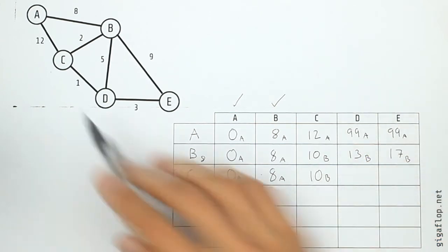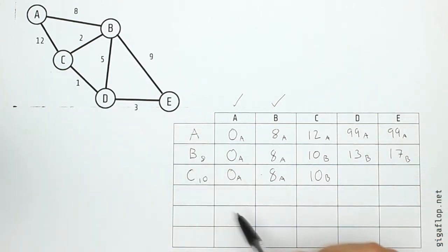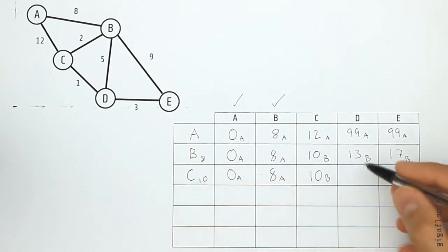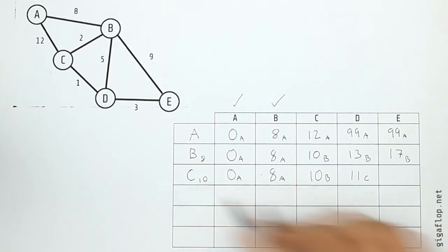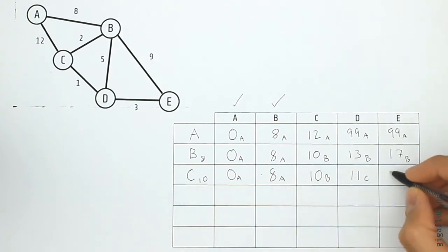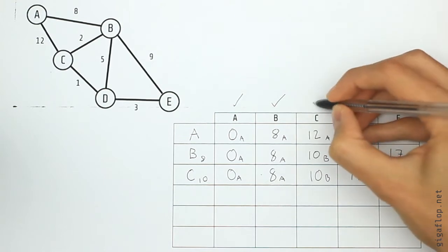Now C to D, they are connected with a length of one, so we're going to do ten plus one, that's eleven, which is less than thirteen, so we're going to replace it eleven from C. C to E, they aren't connected, so we're going to leave it at seventeen from B. So we've finished our inspection of C, we can tick it off.